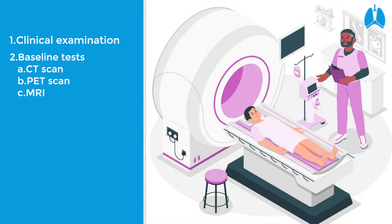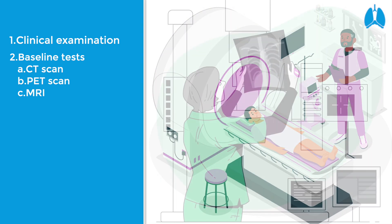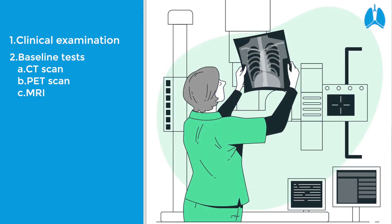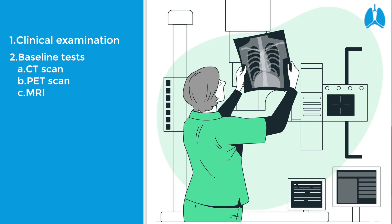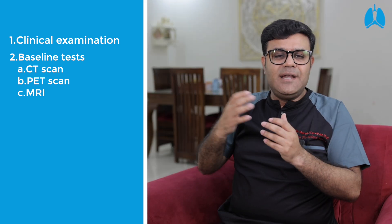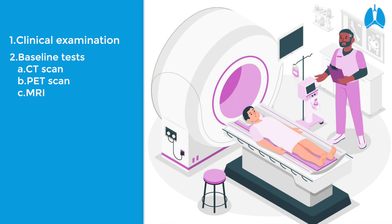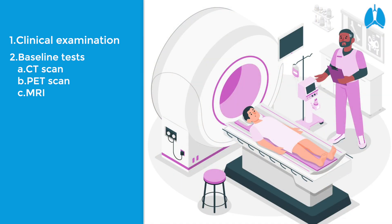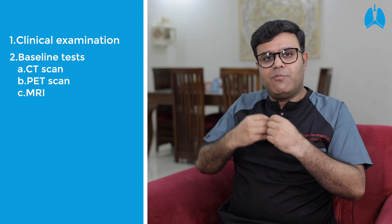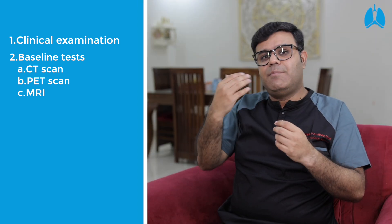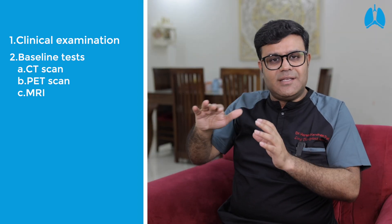Our most important test is CT. We can see where the disease is. If we have a cancer, we can also do a PET scan. If a patient has a benign disease, we can do CT to see where the disease is and plan treatment accordingly.